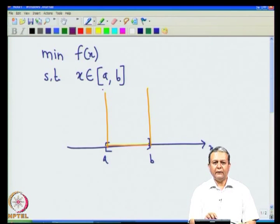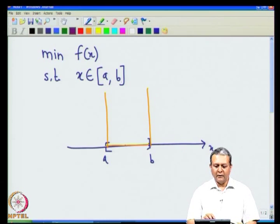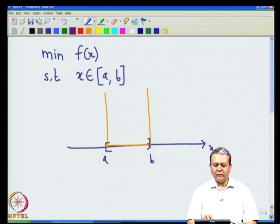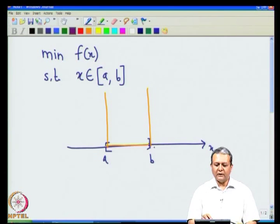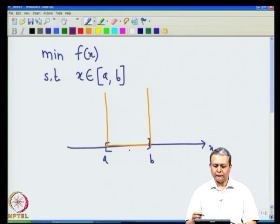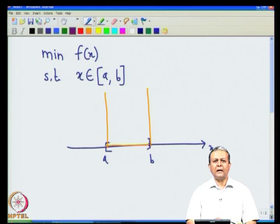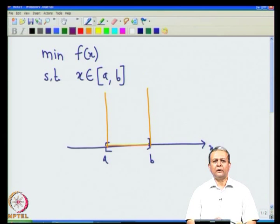If we want to minimize a function subject to a closed interval [a, b], the function ψ takes the value 0 on that interval and infinity elsewhere, so the moment we move away from the interval the function goes to plus infinity. However, this function is not continuous, so it cannot be used directly to solve an unconstrained optimization problem, because most of our techniques are based on derivatives of the function.